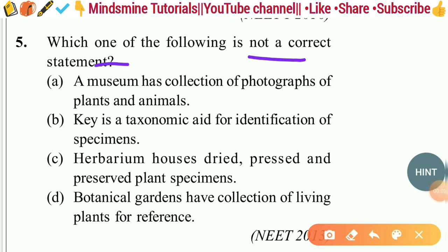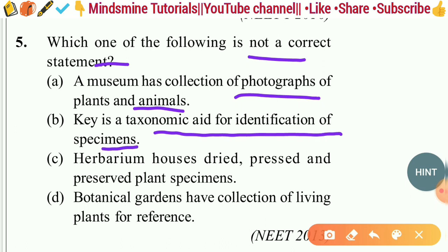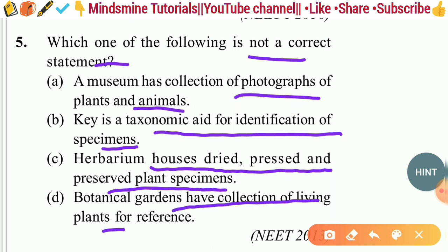Question five: Which one of the following is not a correct statement? Options include: museum has a collection of photographs of plants and animals as a taxonomic aid; herbarium houses dried, pressed and preserved plant specimens; botanical gardens have collections of living plants for reference. The correct answer is option A — museum does not serve as a taxonomic aid through photographs.